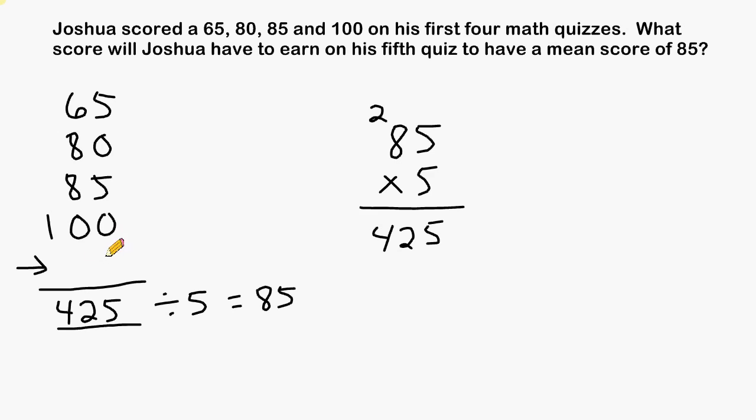So now we have to figure out what this fifth score is. So when we add it with the previous four quiz scores, it would be a total of 425. So what we can do next is just add up these four scores.